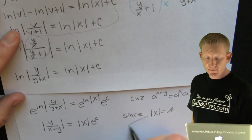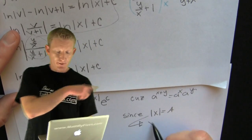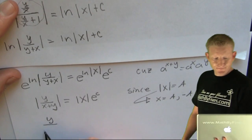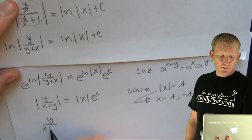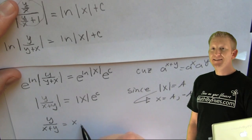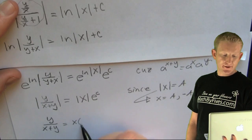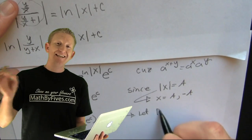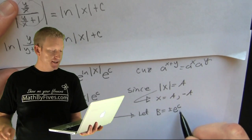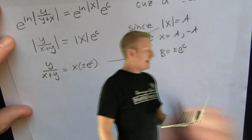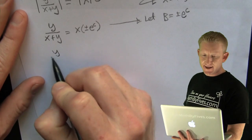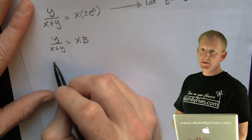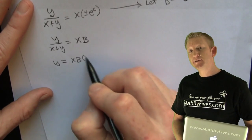Now he's employing the definition of absolute value — if the expression is positive or negative. He did that so he could get rid of the absolute value bars, replacing it with plus or minus e to the c. Then he makes another substitution: since e to the c is a constant that could be positive or negative, he replaces plus or minus e to the c with B. To make it look nicer, he's made that substitution — not by sines, by differential equations. Now he's going to do some algebra, clear those fractions, distribute, and try to solve for y.